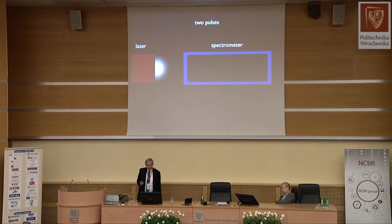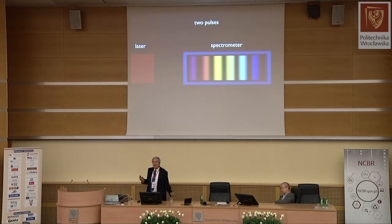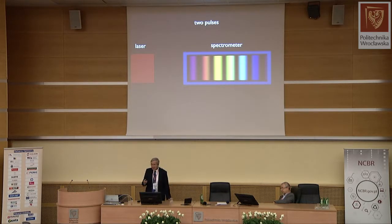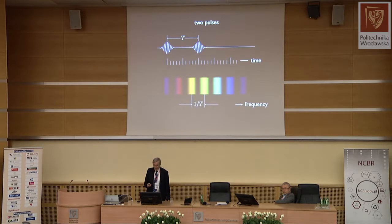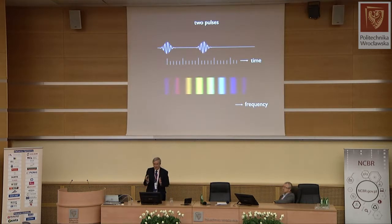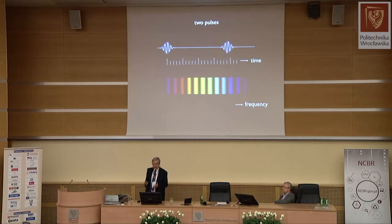If you take not one pulse but two pulses, they can interfere in the spectrograph and give a fringe pattern — similar to a double-slit experiment except the two pulses are separated in time and the fringes are separated in the spectrum. The spacing of adjacent fringes is just the inverse of the time interval between the two pulses. So the farther apart the pulses are, the closer together these interference fringes move. In a way, it looks like a comb.